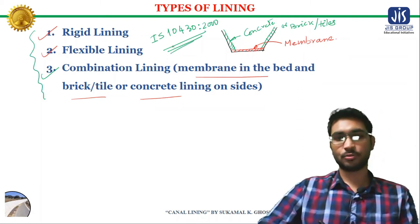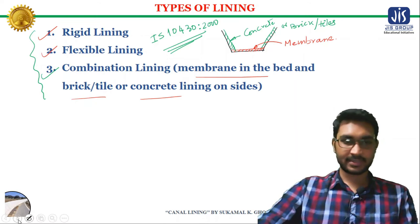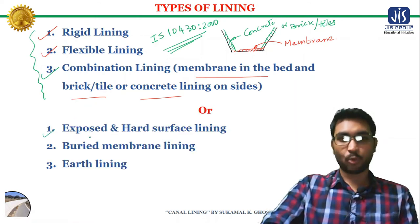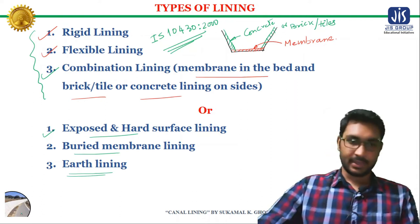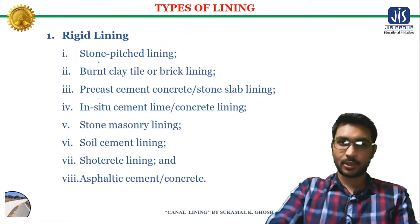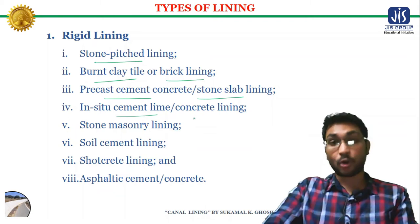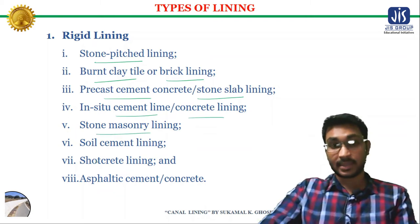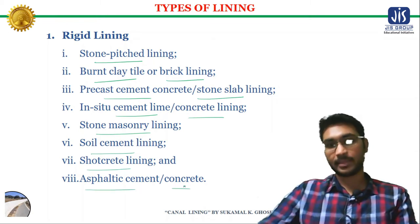You can classify lining in different ways, such as exposed or hard surface lining, buried membrane lining, dry lining, and earth surface lining. There are several types of rigid lining, such as stone pitch lining, burnt clay tile or brick lining, precast cement concrete or stone slab lining, in-situ cement concrete lining, stone masonry lining, soil cement lining, shotcrete lining, and asphaltic cement or concrete lining.